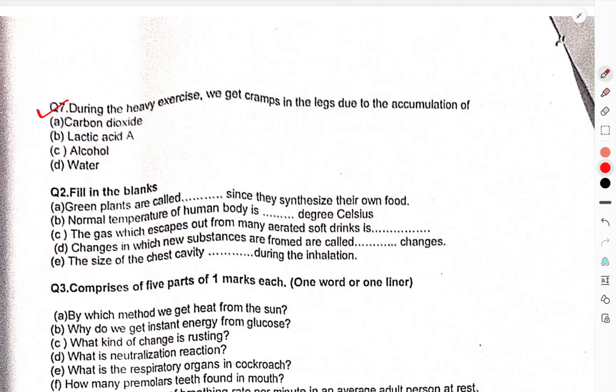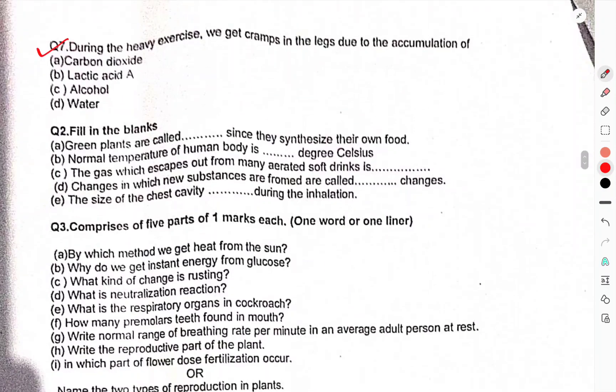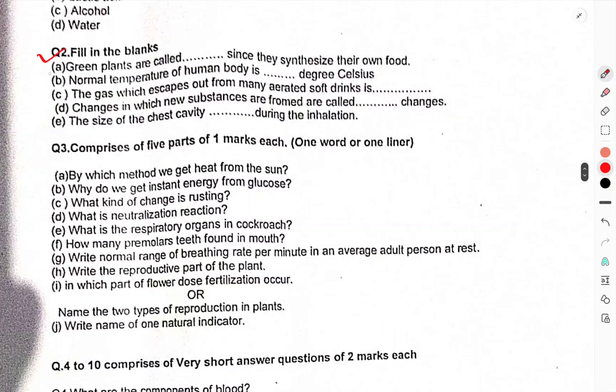Question 5: Out of these gases, which one is used in fire extinguishers? Question 6: Which of the following is a chemical change? Question 7: During heavy exercise we get cramps in the legs due to the accumulation of what?